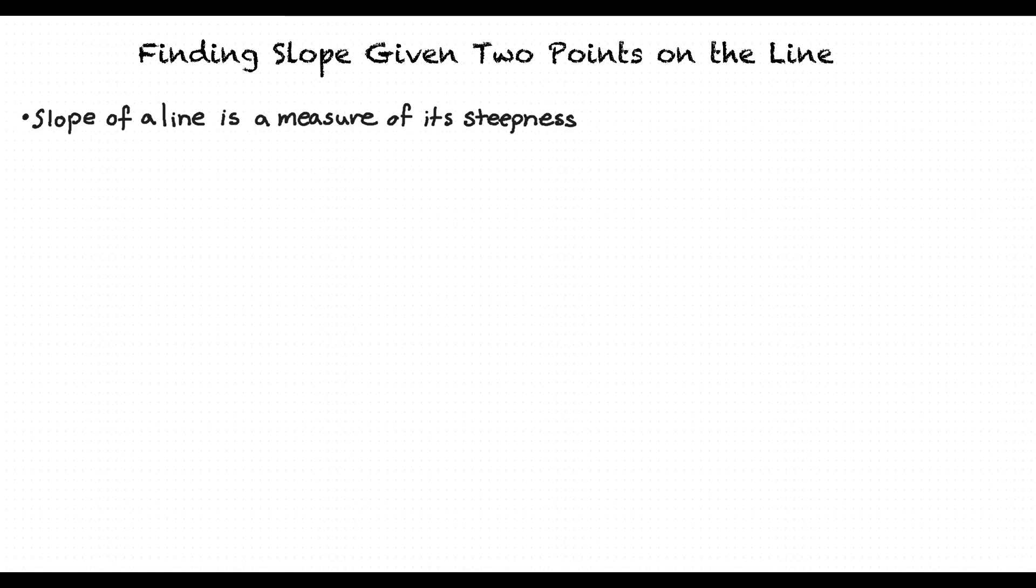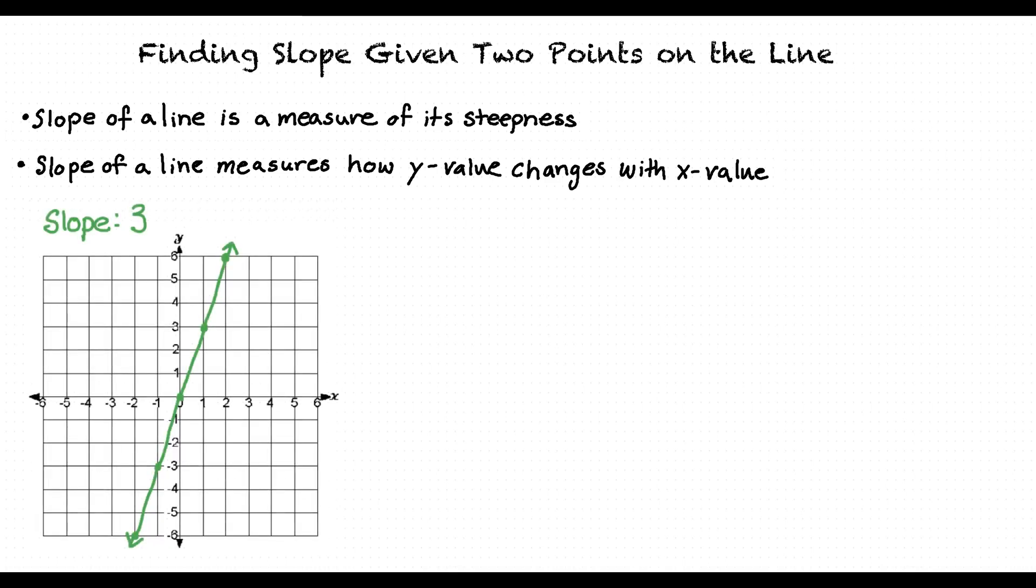The slope of a line is a measure of its steepness, or how rapidly the y-value of the line increases or decreases with the x-value of a line. Let's take, for example, a line with a slope of 3.